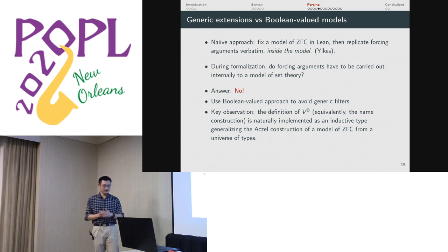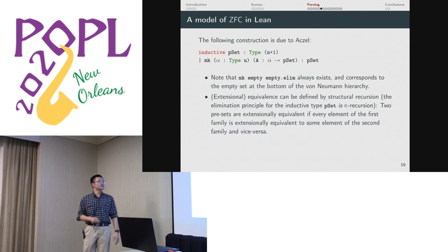The key observation in implementing the forcing extension is that to define the Boolean value universe VB, the B names, we can naturally find a way to implement this as an inductive type, which generalizes the Aczel sets. Peter Aczel came up with a way to encode a model of ZFC in a type theory like Lean's.